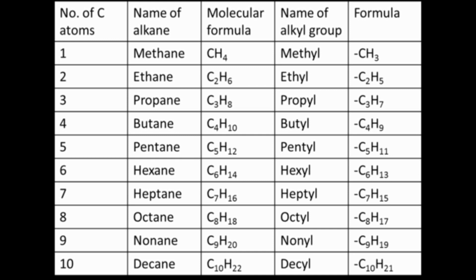Alkanes with an A have single bonds only. Alkenes with an E have at least one double bond. Alkynes with a Y have at least one triple bond.